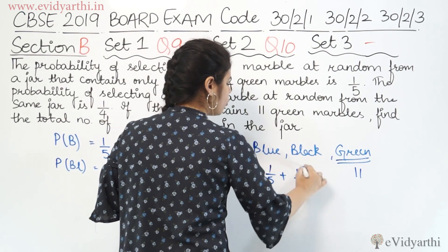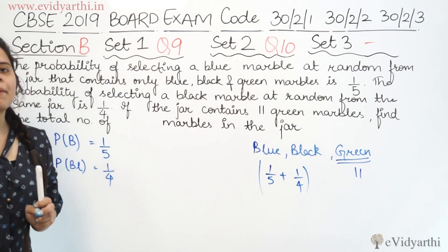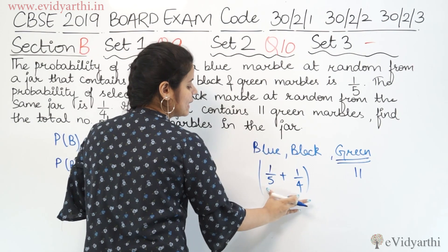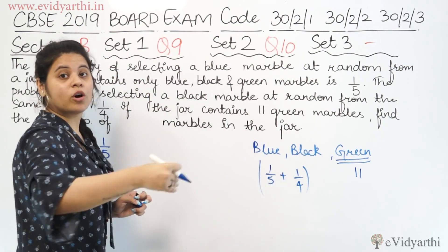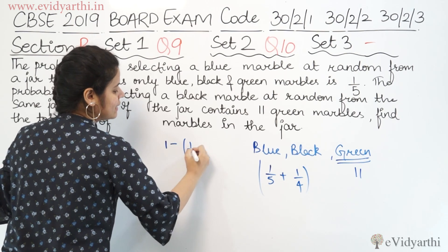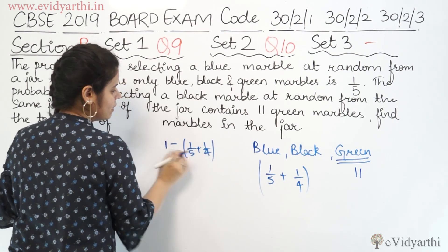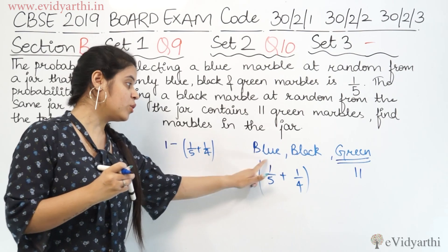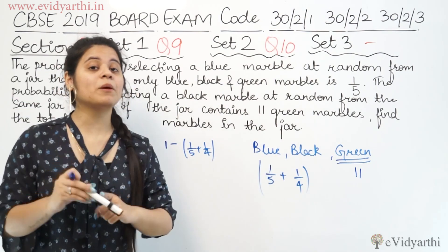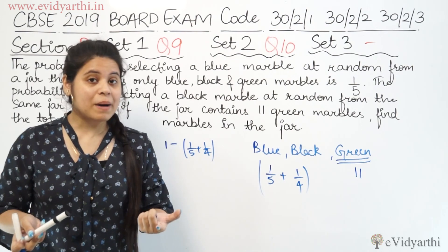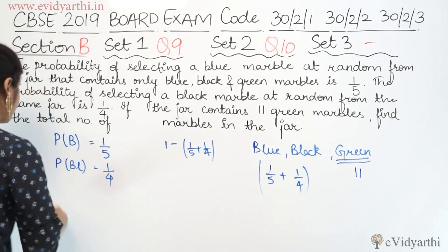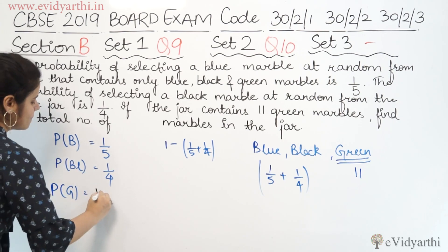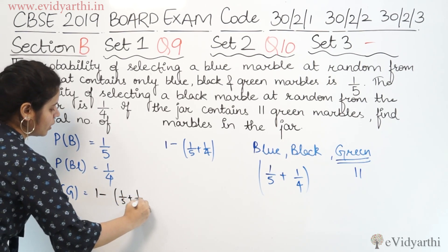The LCM of 5 and 4 is 20. We know that the probability of an event not happening is 1 minus the probability it does. If blue and black are not happening, then green must occur. So, the probability of green marble = 1 minus (1/5 + 1/4). Green marble ki probability aa gayi: 1 minus (1/5 + 1/4).